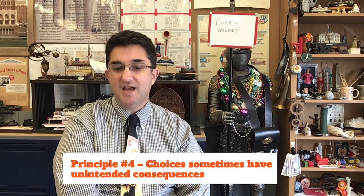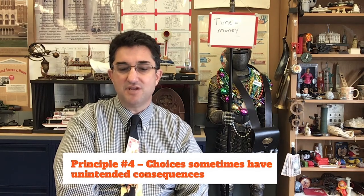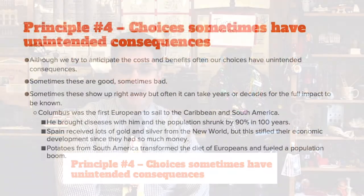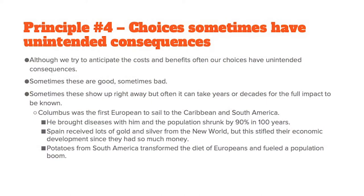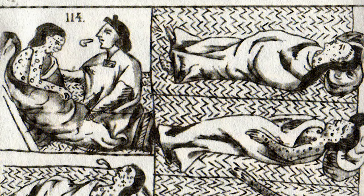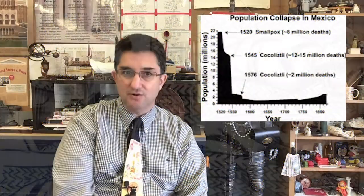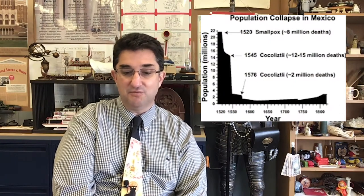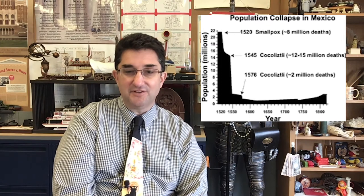Principle four: sometimes our choices have large unintended consequences that we don't necessarily realize. Sometimes they're good and sometimes they're bad, and sometimes these consequences can show up right away, while other times we might have to wait decades or centuries to see the full impact. For example, Columbus was the first European to sail to the Caribbean and South America, but he brought diseases with him — and within a hundred years, 90% of the population that had been there in 1492 was gone.